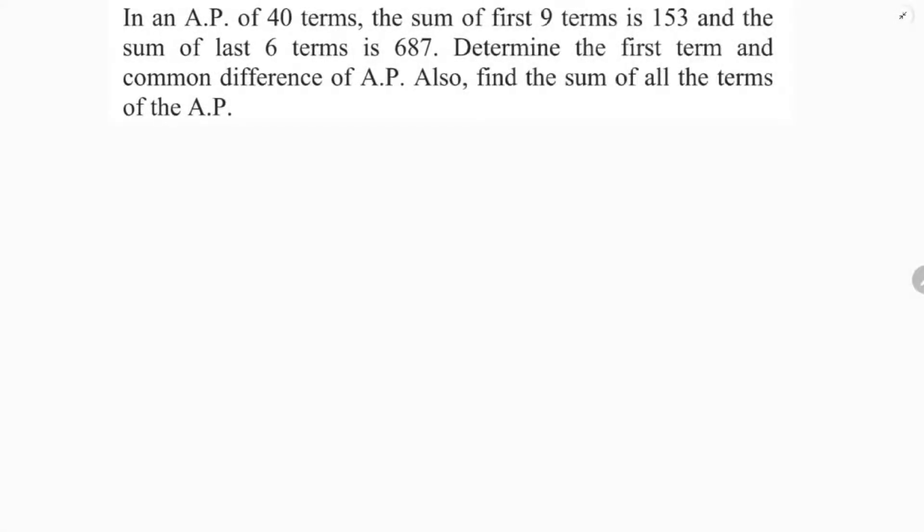In an AP of 40 terms, the sum of first 9 terms is 153 and the sum of last 6 terms is 687. Determine the first term and common difference of the AP. Also, find the sum of all the terms of the AP.